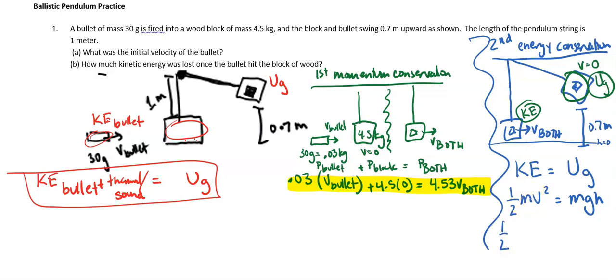So keep in mind, we want to find v of both of them. So what mass should we use? Well, in this case, they're stuck together, which is not necessarily true for all of these problems, but in this case it is. So let's use the mass of both. So 4.53 times velocity squared equals 4.53 times 10 times 0.7.